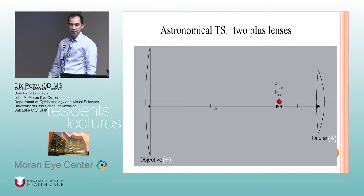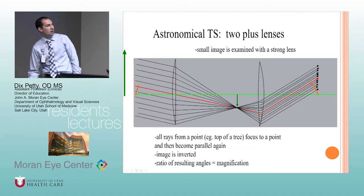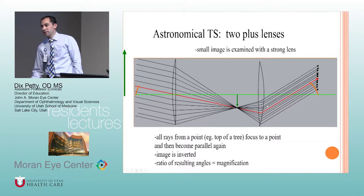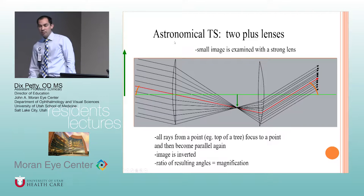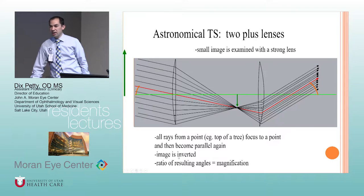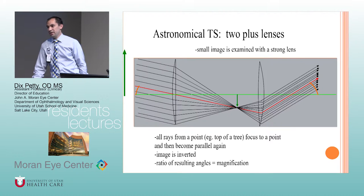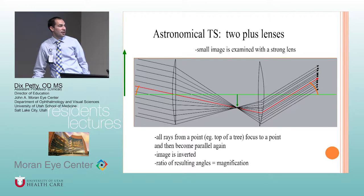An astronomical telescope uses two plus lenses, where the focal points meet between the two lenses. Parallel rays come in and change the angular magnification, making objects appear bigger. However, with two plus lenses, the image is inverted — if you look at a tree, it's upside down. Astronomical telescopes are typically higher power, used for stars and galaxies, so the inversion doesn't matter. But for low vision patients, it does matter, so prisms or mirrors are used to reinvert the image.